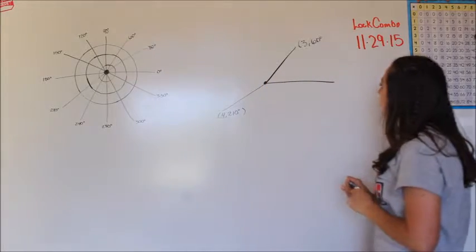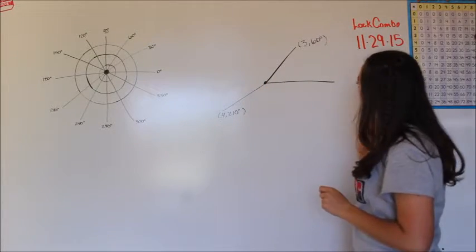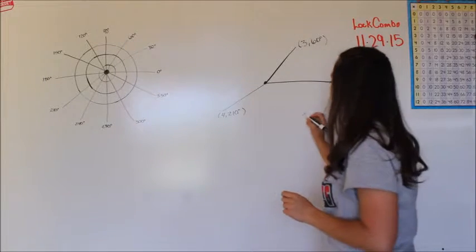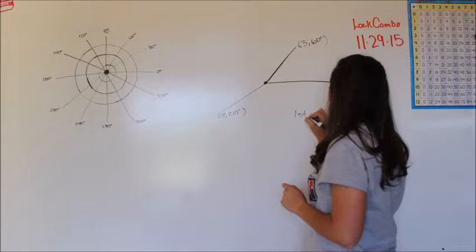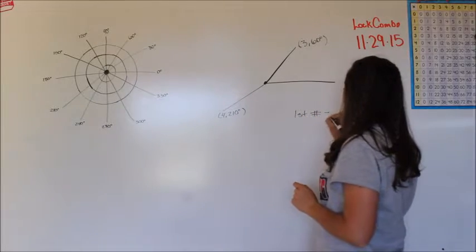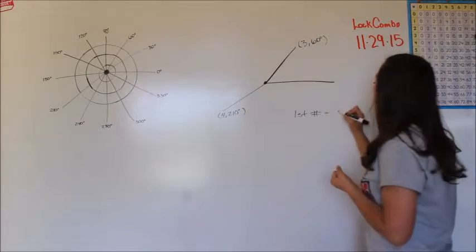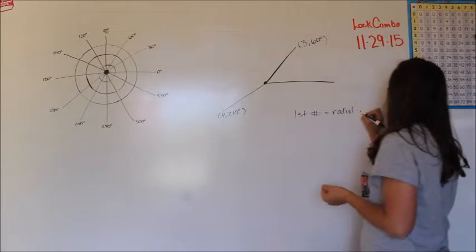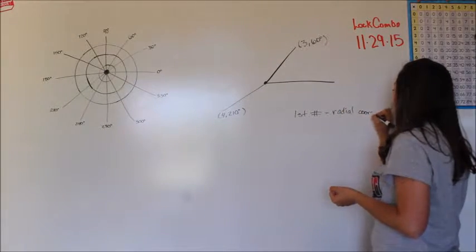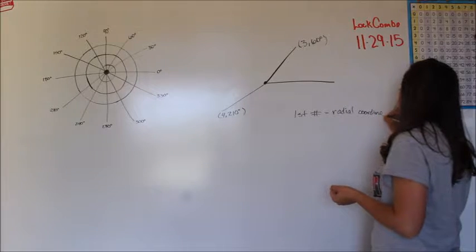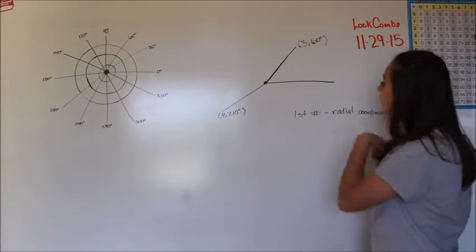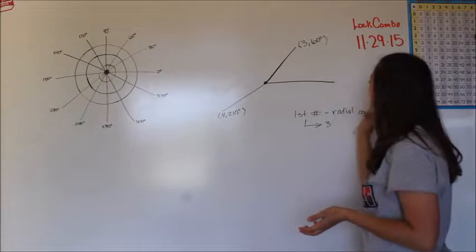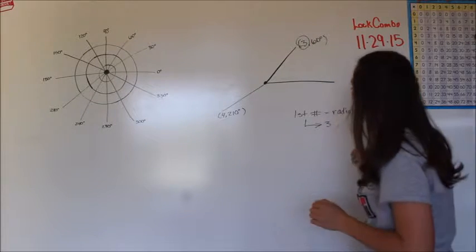And so what we have is this here, what this first number represents. So the first number is going to represent the radial coordinate. Radial coordinate. And so in this case, the radial coordinate is going to be 3 because see, that's the first number.